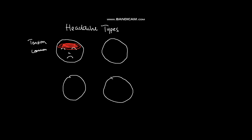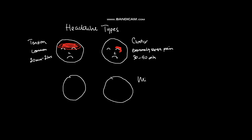A tension headache usually lasts for 20 minutes to about 2 hours. Cluster headache is characterized by extremely severe pain and a steady, boring sensation at the back of one's eye, usually lasting about 30 to 90 minutes. Another type is a migraine, which is often unilateral — a throbbing pain usually preceded by warning symptoms like visual blurring, shimmering, or scintillating distortions. This usually lasts for 30 minutes to about 24 hours.